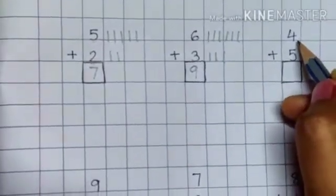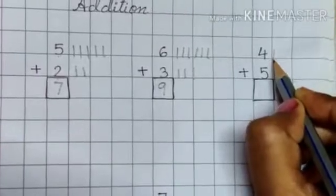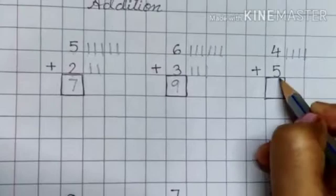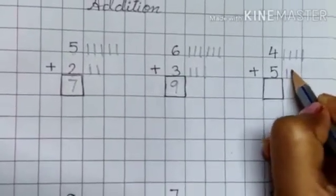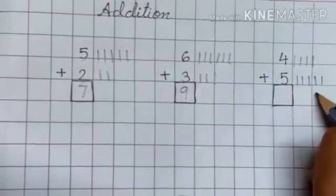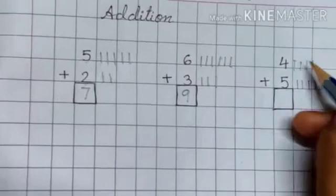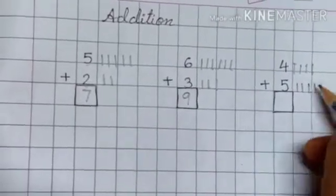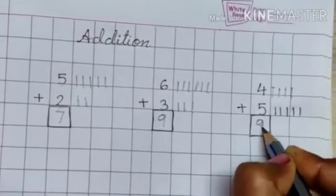Over here we have number four, so how many lines do we draw? Four lines. Count carefully: one, two, three, four. And over here we have number five, so we will draw five lines: one, two, three, four, five. Then we count all the lines together: one, two, three, four, five, six, seven, eight, nine. So the answer is nine.